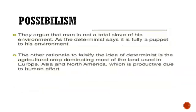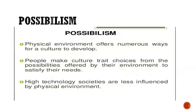Another rational point to falsify determinism is agriculture. A crop dominating most of the land used in Europe, Asia, and North America is productive due to human effort. If only the environment determined things, a crop suited to one place would not grow elsewhere. But humans have made the land capable of growing crops everywhere — this is possibilism in action.